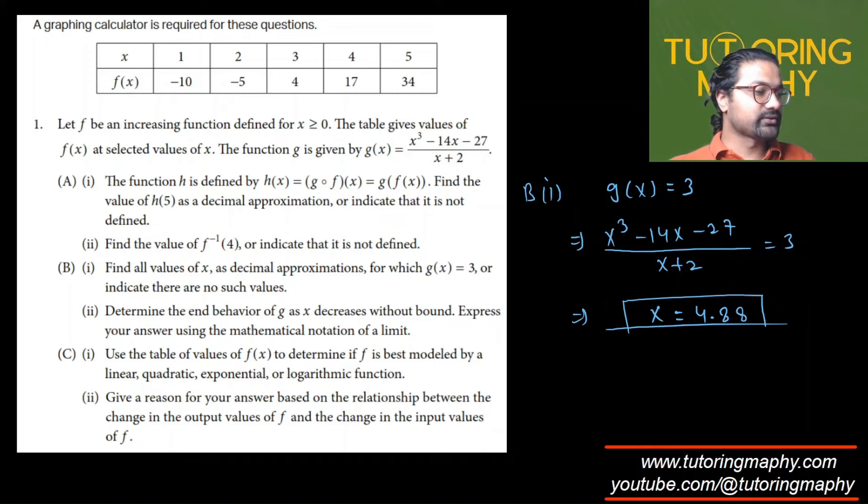Part B2: Determine the end behavior of G(x) as x decreases without bound. Express your answer using mathematical notation. This is a rational function given by x cubed minus 14x minus 27 over x plus 2.